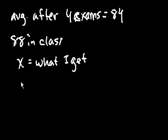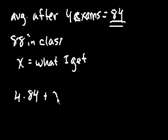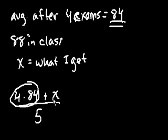So now what we can say is that the first four exams, I can either list out the first four exams that I took, or I already know what the average is. So I know the sum of the first four exams is going to be 4 times 84. And now I want to add what I get on the fifth exam, x. And now I'm going to divide that by all five exams.